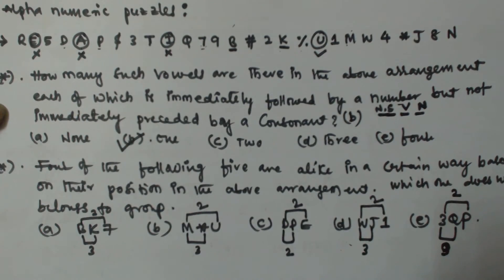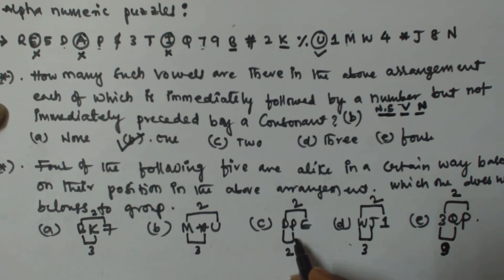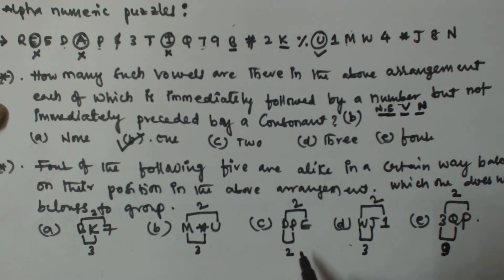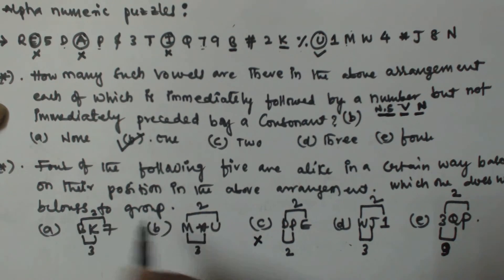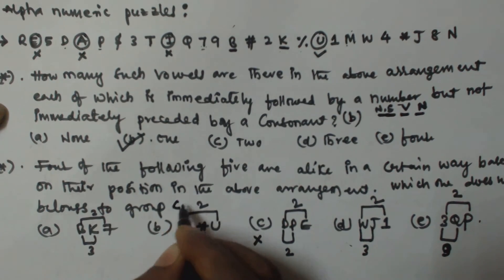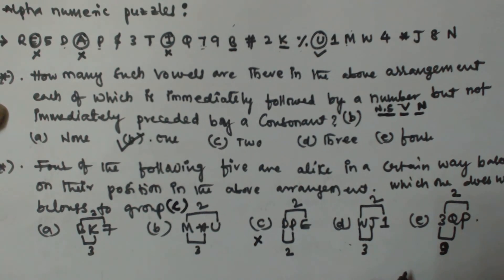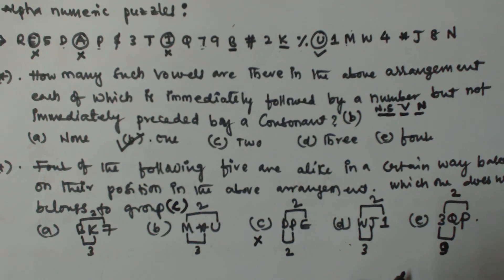If you observe, option C (dp) takes two steps to the right and two steps to the left, whereas all the remaining options take three steps to the right and two steps to the left from the first element. So option C does not belong to this group, and it is the answer for the second question. I hope you understood — thank you for watching, please leave a comment if you have any doubts, and please subscribe to my channel.